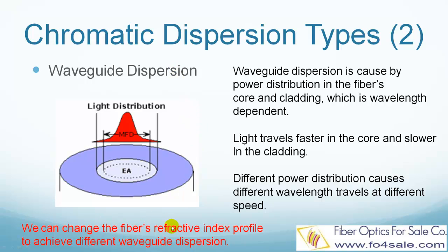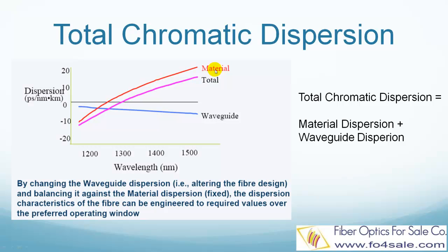Since we can change the fiber's refractive index profile, we can engineer the waveguide dispersion to make specialty fibers. The total chromatic dispersion is the sum of material dispersion and waveguide dispersion. In this figure we can see the dispersion versus wavelength curves: material dispersion shown in red, waveguide dispersion in blue, and total chromatic dispersion in pink. Although we cannot change material dispersion, we can design the fiber's refractive index profile so the waveguide dispersion compensates for the material dispersion, achieving zero chromatic dispersion at a specific wavelength — at 1300 nanometers for a standard single-mode fiber.